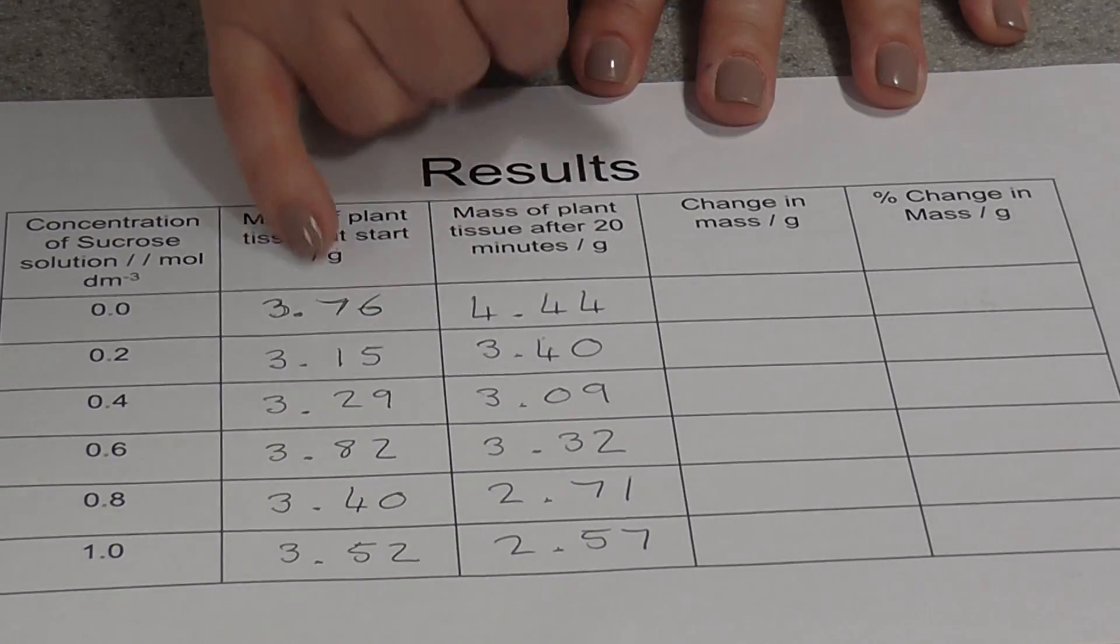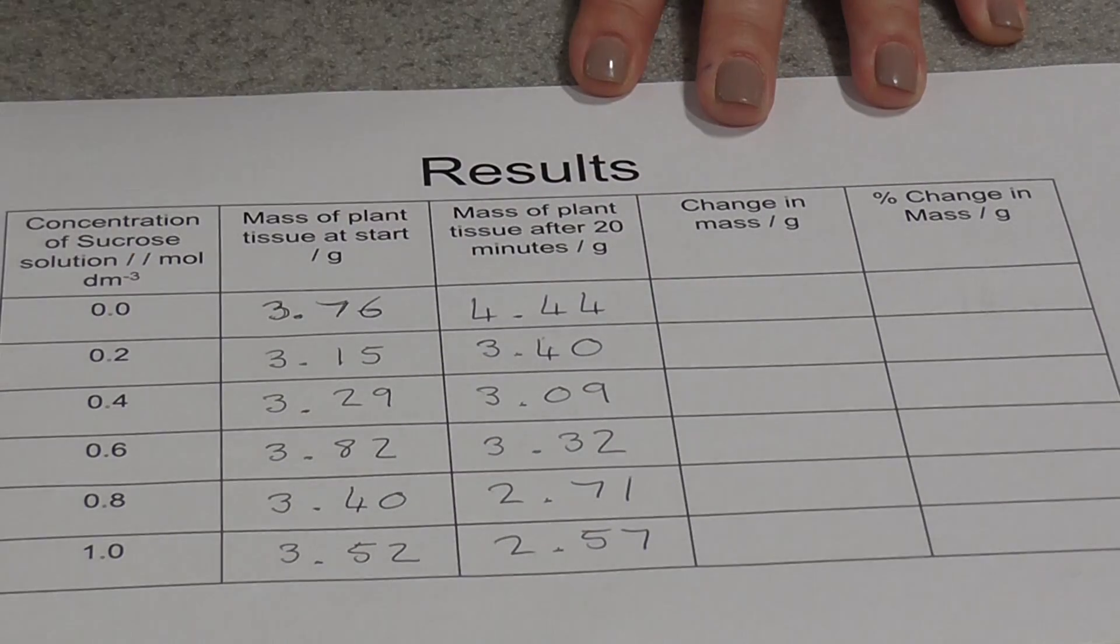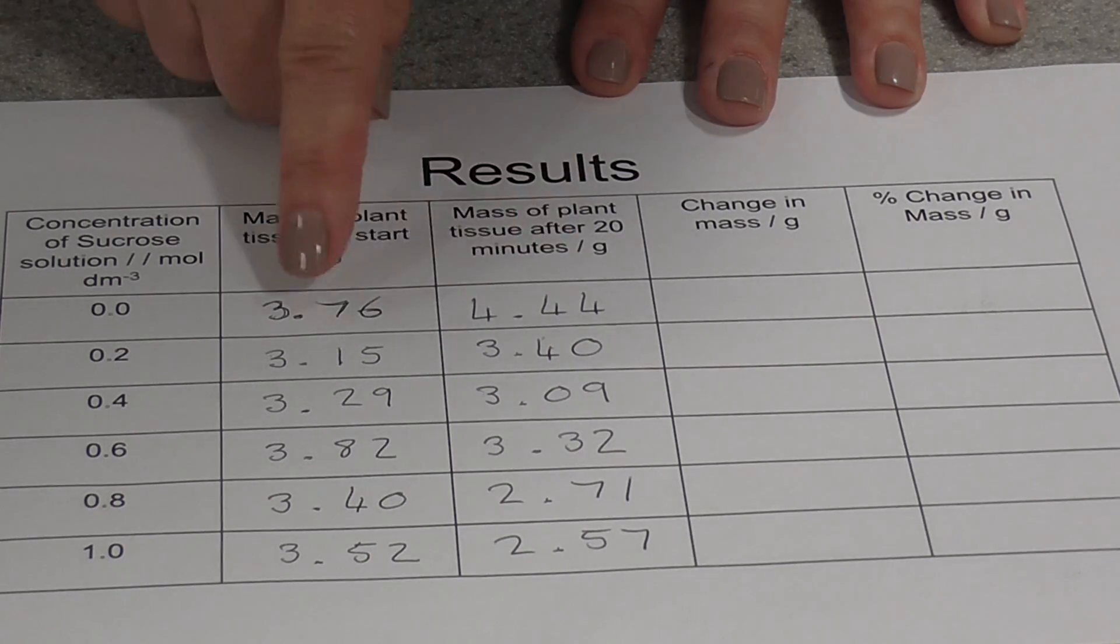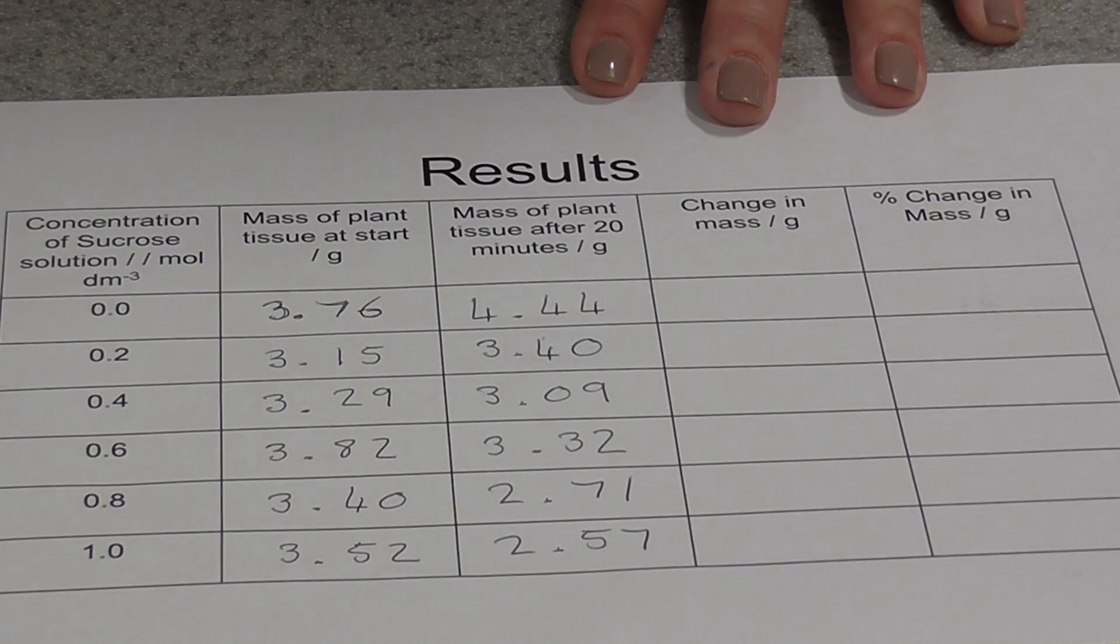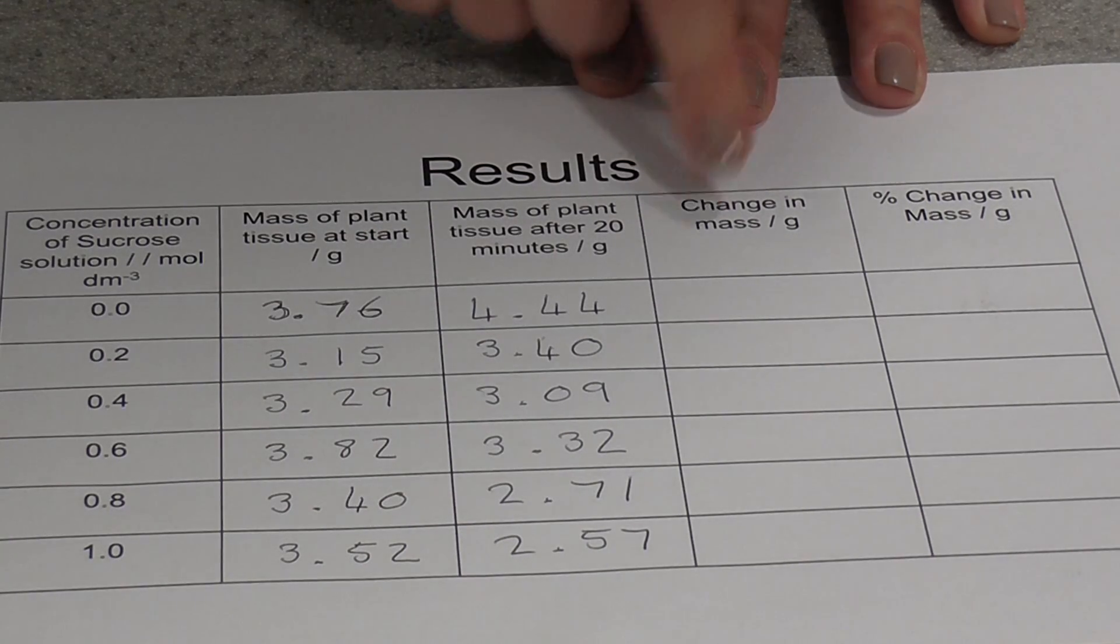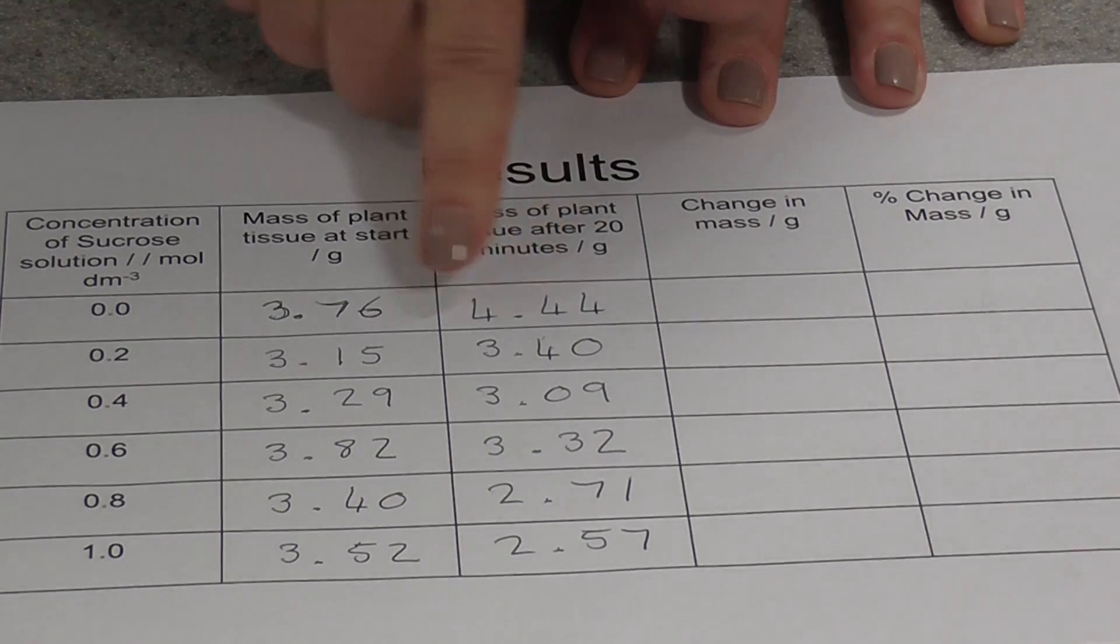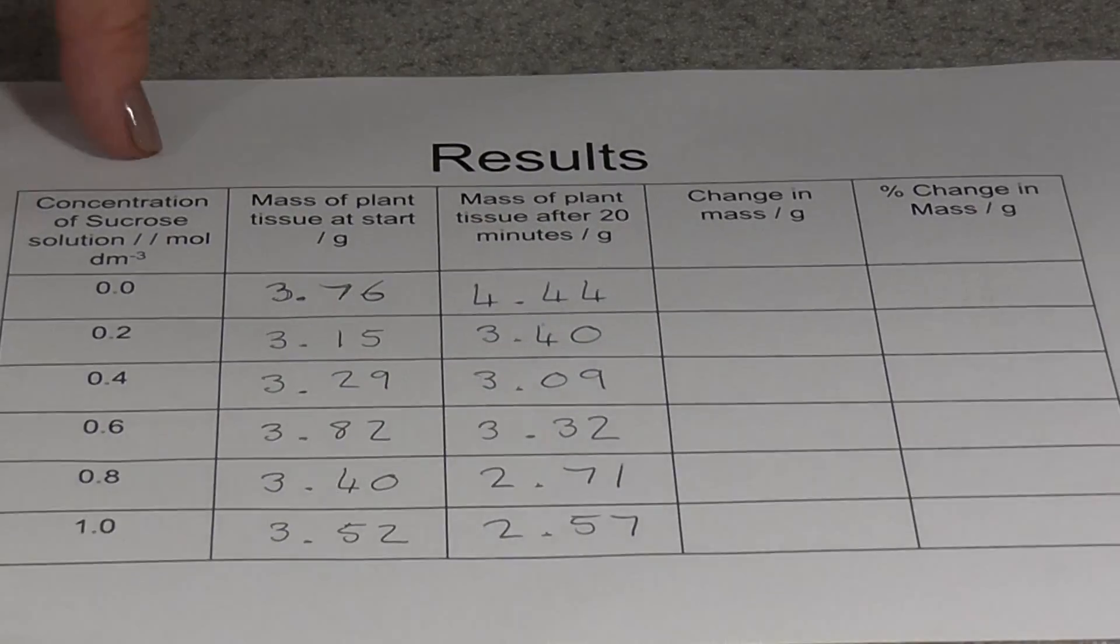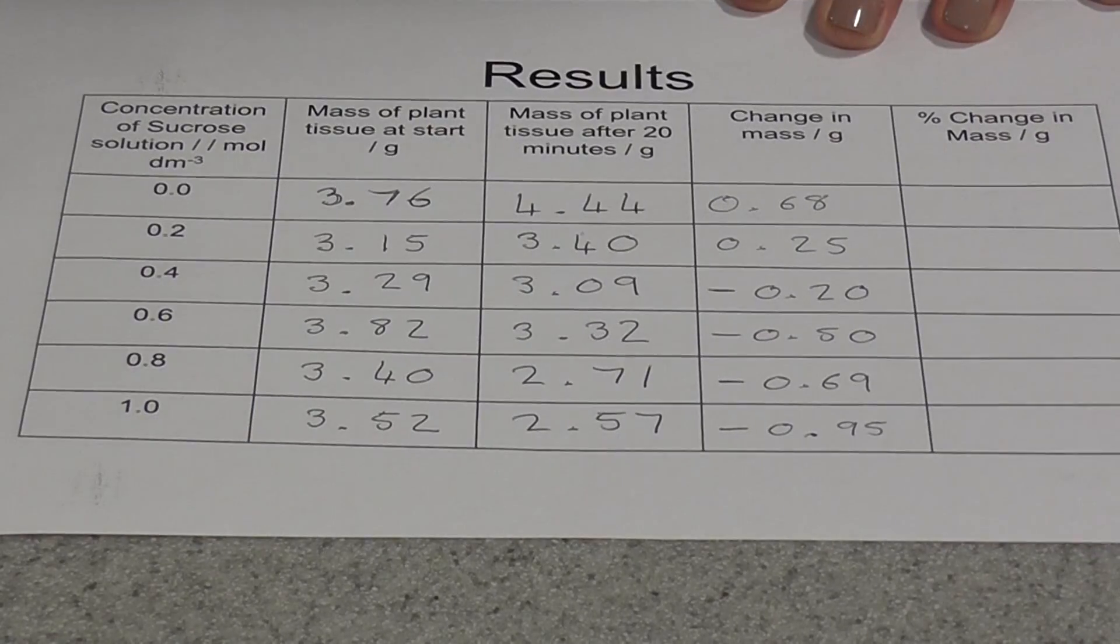Let's have a look at the results here. If we look at these, these are the weights at the beginning, the mass at the beginning. This is the mass of each chip after twenty minutes in the different solutions. We can see that some of the chips have gained mass, others have actually lost mass. Now we need to calculate the change in mass of each chip, which is obviously the difference between the two values. Make sure when you record these results that you record a minus for any where they have lost mass.